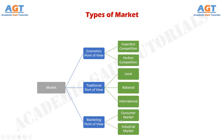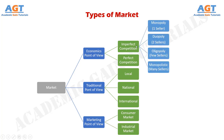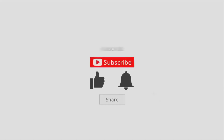Based on imperfect competition, market can be again classified as monopoly with one seller, duopoly with two sellers, oligopoly with few sellers, and monopolistic with many sellers.